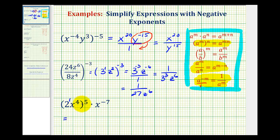So we have powers to powers, we're going to multiply the exponents. So we'll have 2 to the power of 1 times 5, that's 5, x to the power of 4 times 5, that's 20. And we still have to multiply this by x to the power of negative 7.